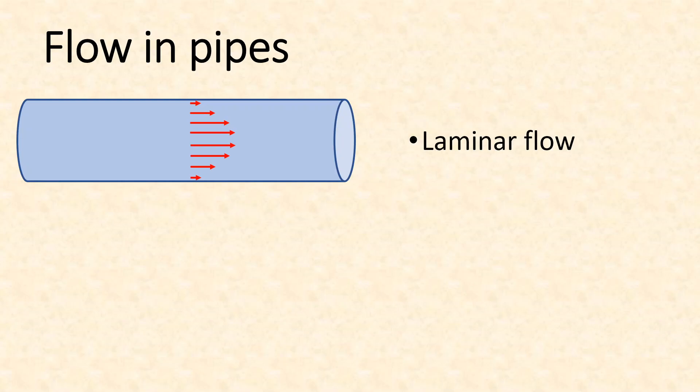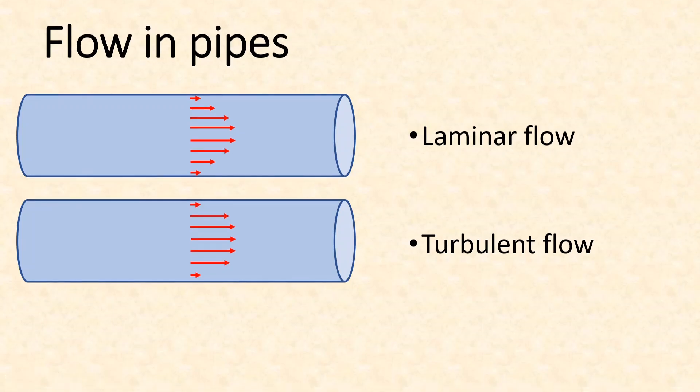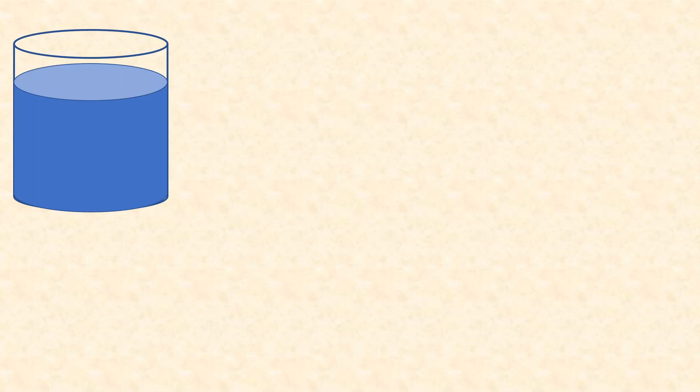Firstly, flow in pipes. We have already learned about laminar flow in the previous semester, so in this semester we'll also learn about turbulent flow. In most civil engineering applications, flow inside the pipe is generally turbulent, and we'll need to learn about the governing equations of turbulent flow, what are the factors that affect turbulent flow inside a pipe.